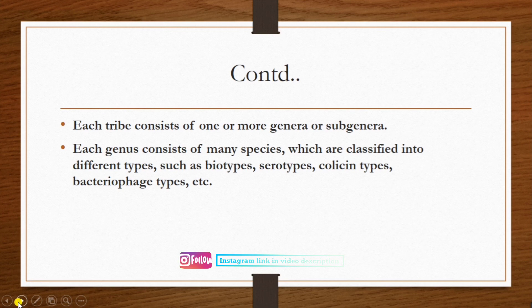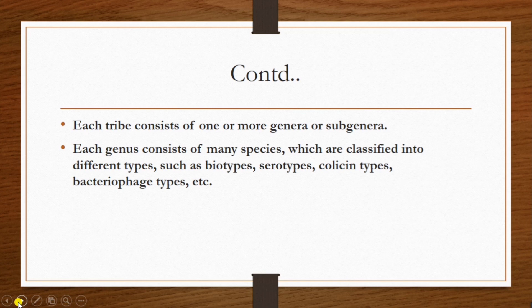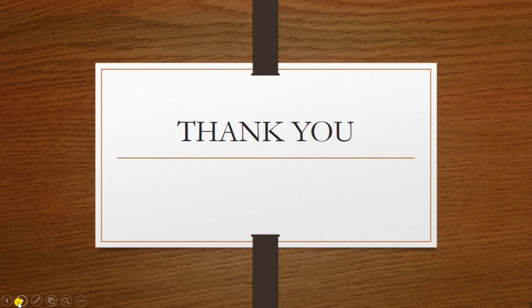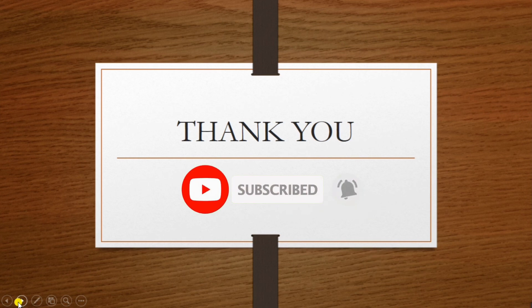To summarize the salient features of the family Enterobacteriaceae: they are gram-negative bacilli, they grow on ordinary medium, they are catalase positive, they are oxidase negative, they can reduce nitrates to nitrites, they can ferment sugars, and they are non-fastidious. If you have any queries, please post them in the comment section. Please like, share, and subscribe to our channel. Thank you.